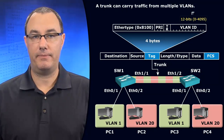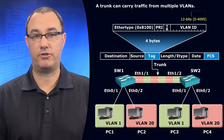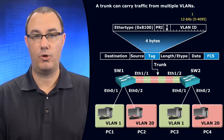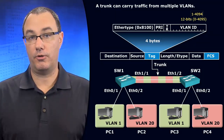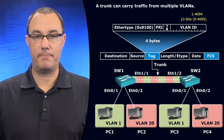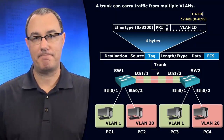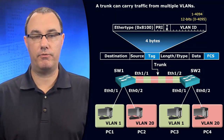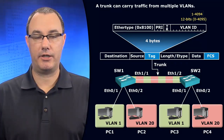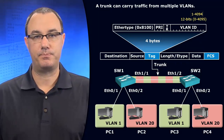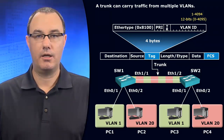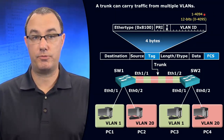We can only use a subset of those — 1 through 4094 — and there are a few that are reserved. Steer clear of VLANs above 4,000; you might have some difficulties with some other technologies. But that's a pretty big space — a very large space.